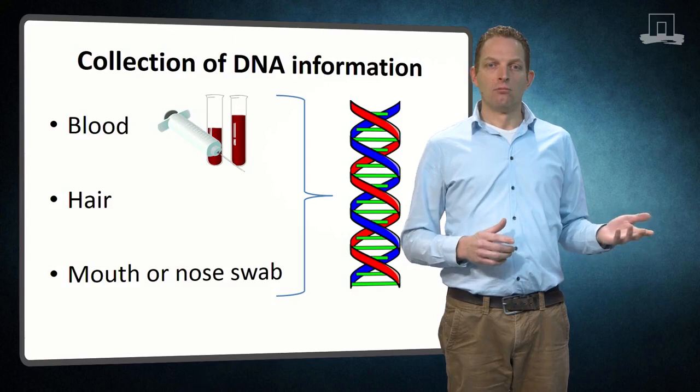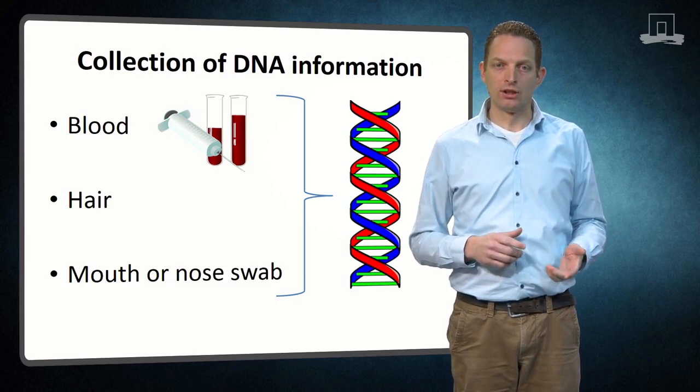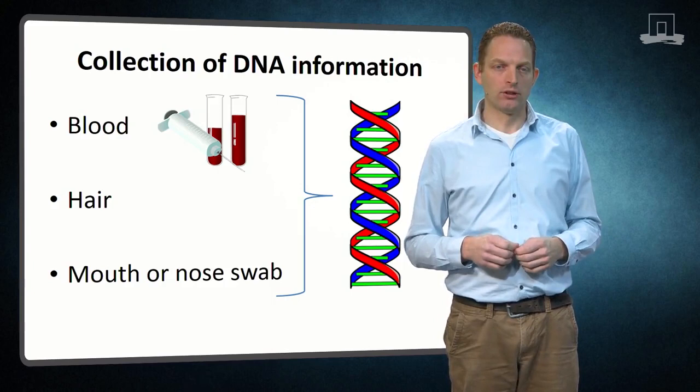Obtained DNA information can be used to check pedigree data, but can also be used to replace pedigree data. In that case, relationships between individuals are computed from DNA information rather than from pedigree information.